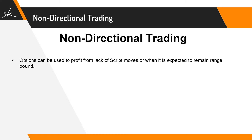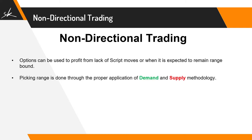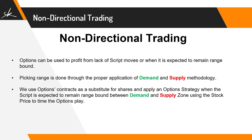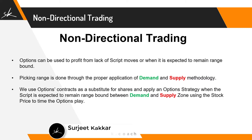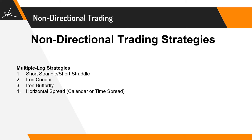Options can be used to profit from a lack of script movement or when prices are expected to remain range-bound. Picking the range is done through proper application of demand and supply methodology — whatever strategy you use, such as support/resistance or Fibonacci levels, can be applied the same way. We use options contracts as a substitute for shares and apply option strategy when the script is expected to remain range-bound between demand and supply zones, using the stock price to time the options play.